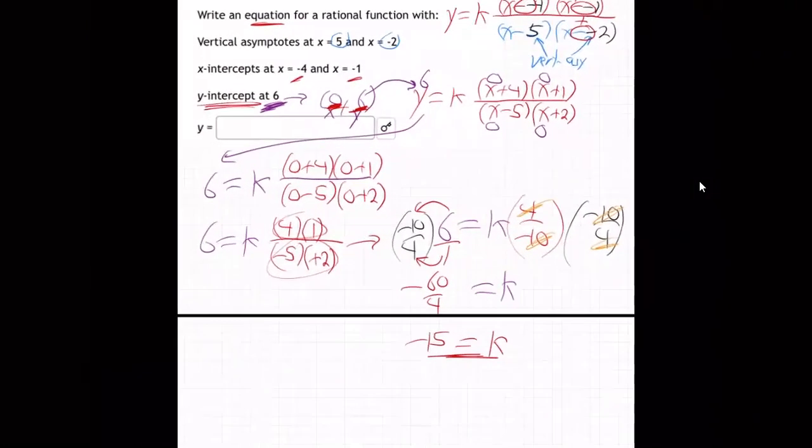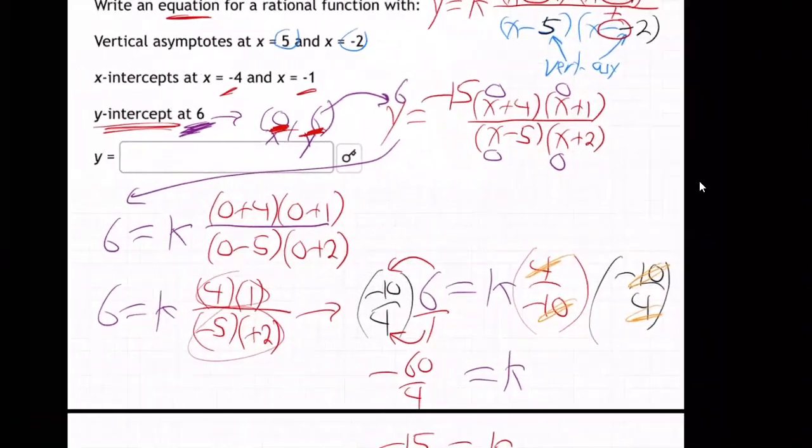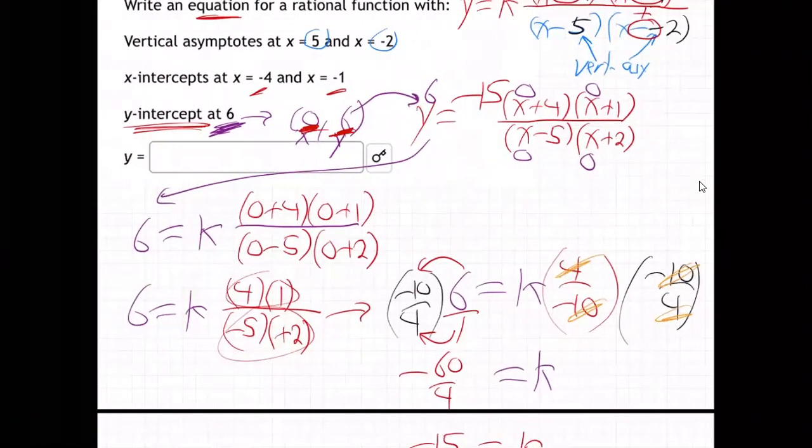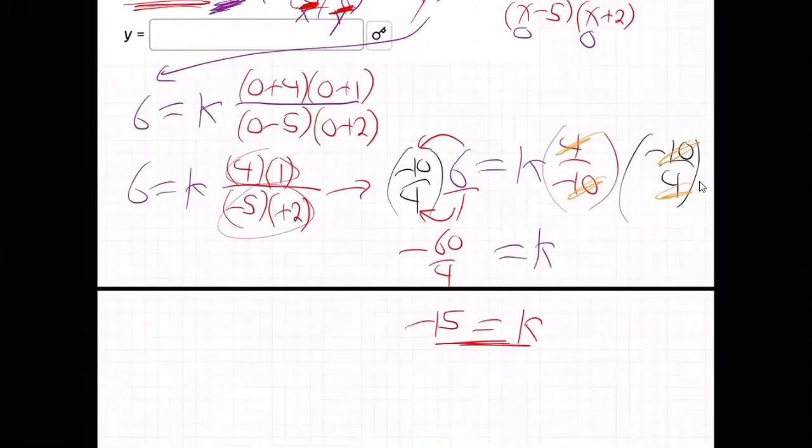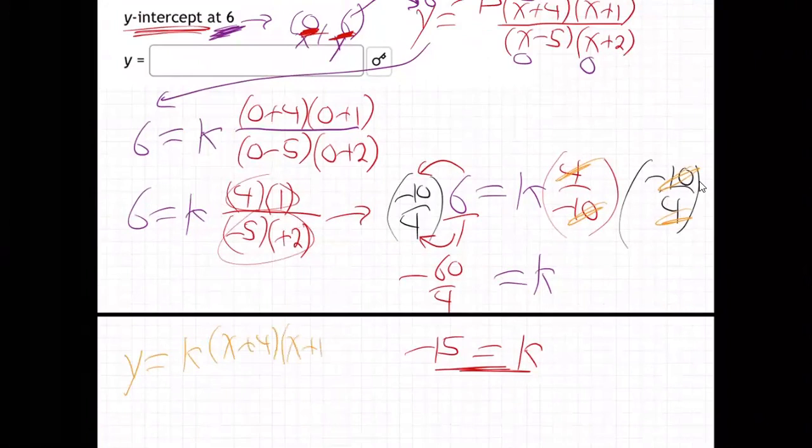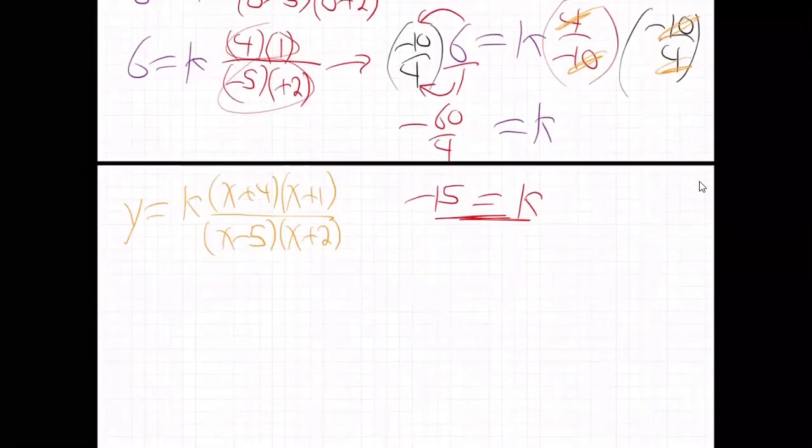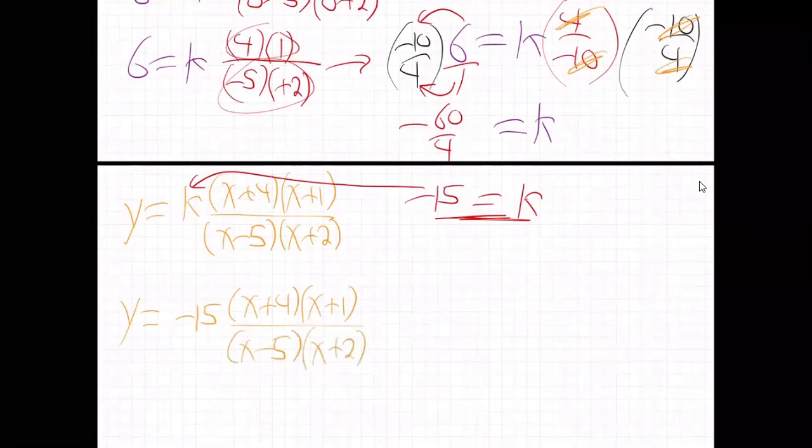So what's our function? It is this right here. If I go right back here and I just make this k in the front negative 15, that's my answer. So I just make that k in the front. So it is y equals k, what was it? x plus 4, x plus 1 over x minus 5, x plus 2. And now we know k is minus 15. So we get y is minus 15, x plus 4, x plus 1, all over x minus 5, x plus 2. So there we go. There's the answer.